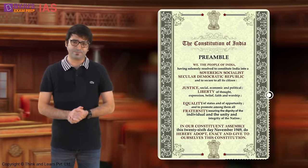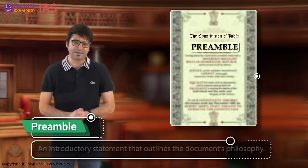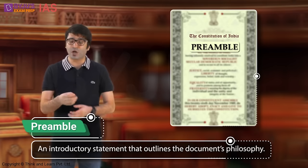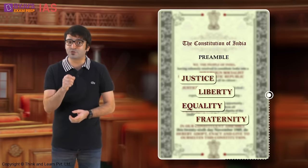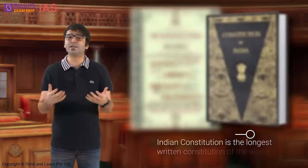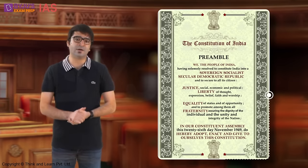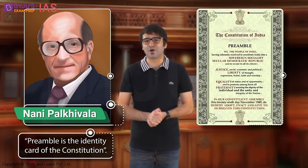Today we will be learning about the preamble of the Indian constitution. The preamble to a constitution is an introductory statement that outlines the document's philosophy. It embodies the fundamental values and principles on which the constitution is based, and includes the aims and objectives which the founding fathers enjoined the polity to strive to achieve. Given that the Indian constitution is the longest written constitution of the world, reading the preamble gives us a concise idea of India's constitution in a nutshell. As Nani Palkiwala said, the preamble is the identity card of the constitution.